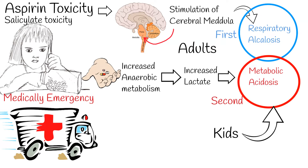The liver metabolizes salicylates by first-order elimination, and the inactive metabolites are then excreted in the urine. With increased salicylate levels, these pathways become saturated, resulting in zero-order elimination.